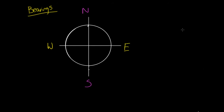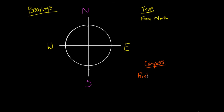In this video we're going to look at two types of bearings. The first one is going to be a true bearing and the second one is what we call a compass bearing. A true bearing is a bearing measured from north — it's always measured with north as our reference point. Whereas a compass bearing is first measured from north or south, and then we give a direction east or west.